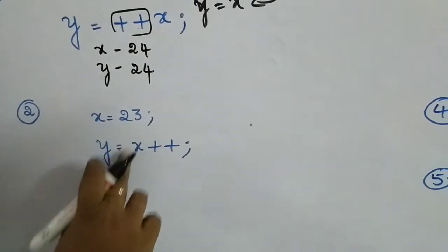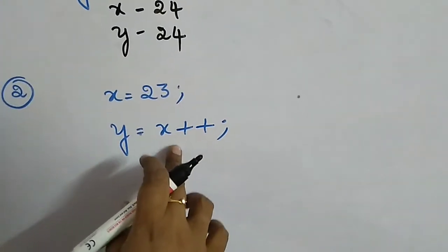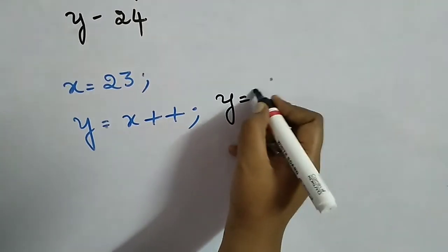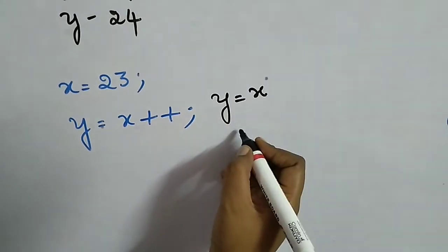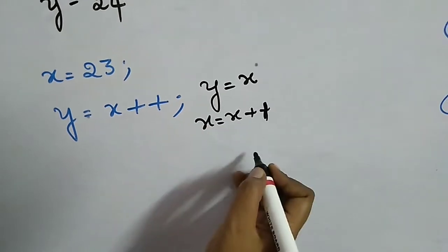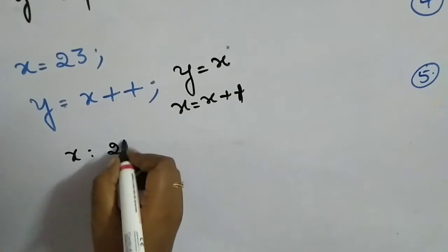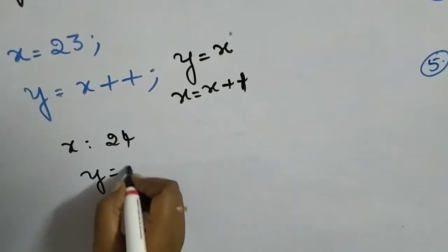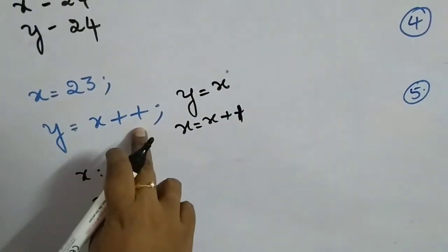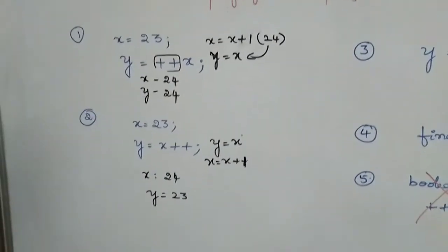In the next example, x is equal to 23 and y is equal to x++ — this is post-increment. The increment should happen after assigning the value to y. So y is first assigned the value of x (which is 23), and then x becomes x plus 1 (which is 24). So x will be 24 but y will be 23.